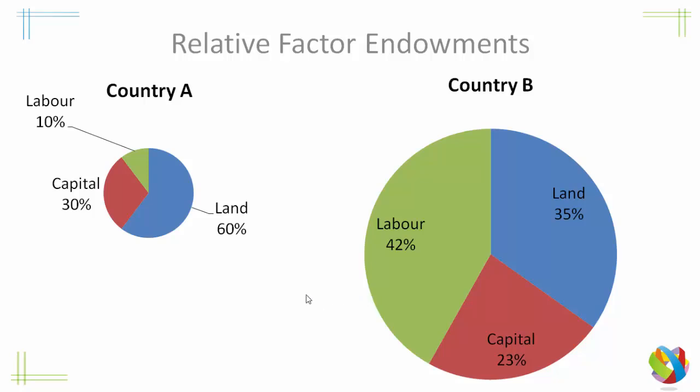And likewise for Country A. They have a lot of land relative to the other factors. Therefore, because it is abundant and plentiful, it's probably going to be cheaper than the other things. And so therefore, they will be able to use this factor as an advantage for production and export.